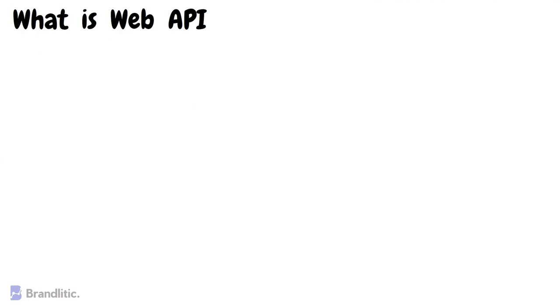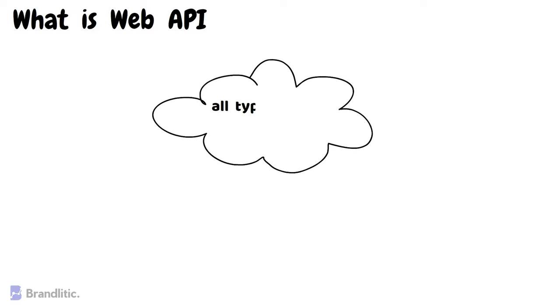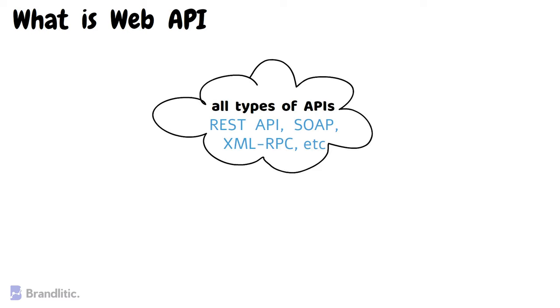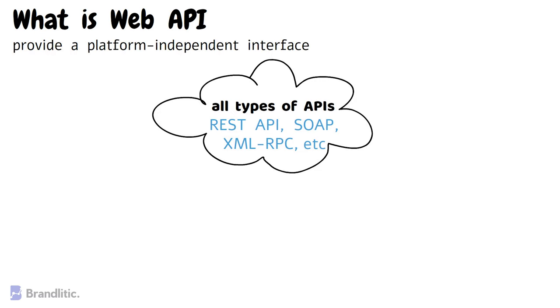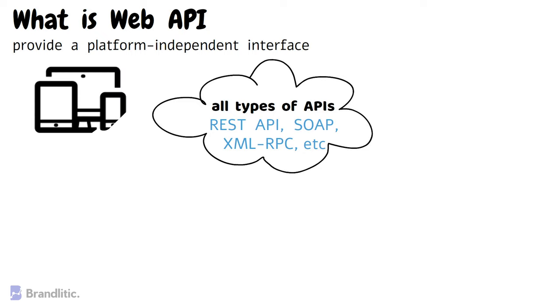Next up, what is Web API? To state simply, Web API is a broader term that encompasses all types of APIs that can be accessed over the internet. It includes REST API, SOAP, XML-RPC, and many other types of APIs. The primary purpose of Web API is to provide a platform-independent interface that can be used by various clients, including web, mobile, and desktop applications.